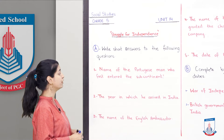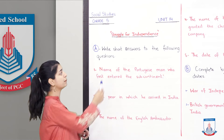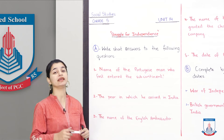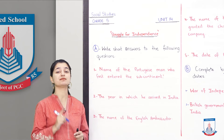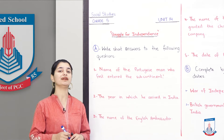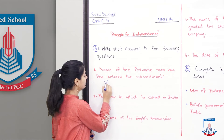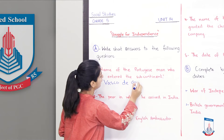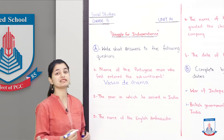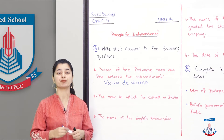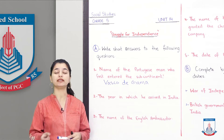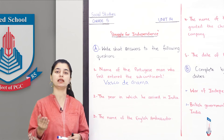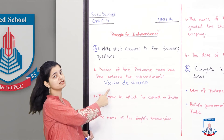In Part A, you will write short answers to all the questions. The first question asks for the name of the Portuguese man who first entered the subcontinent. The first person to enter the subcontinent was Vasco da Gama. He was a Portuguese man and he came to trade. You can write that here — there is nothing difficult about it. In one line, you want to write: the first person to enter the subcontinent was Vasco da Gama.